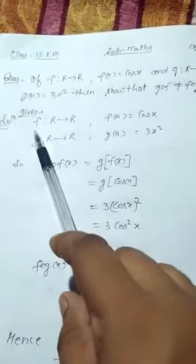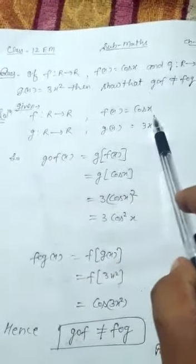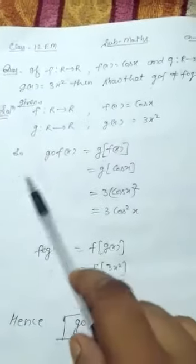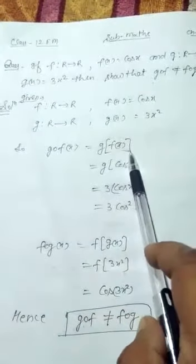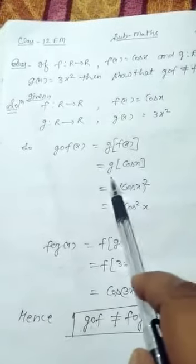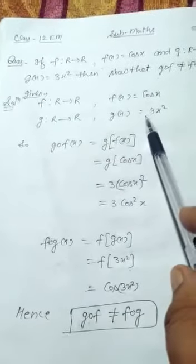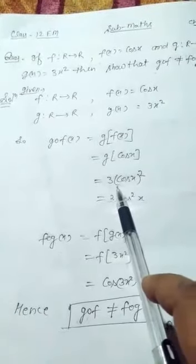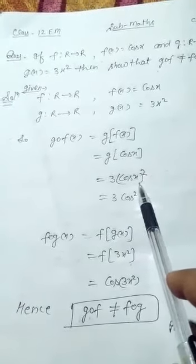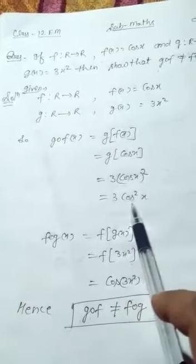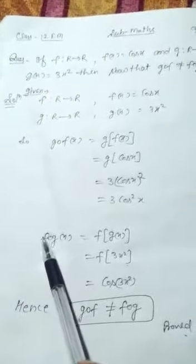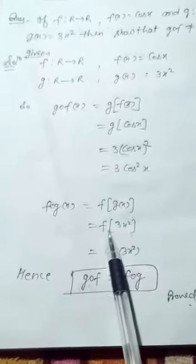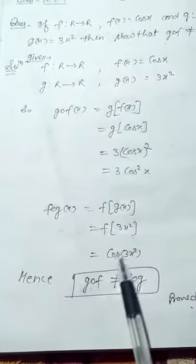Given f(x) = cos x and g(x) = 3x². We find gof(x) = g(f(x)) = g(cos x). Since g(x) = 3x², we get 3(cos x)² = 3cos²x. Now fog(x) = f(g(x)) = f(3x²) = cos(3x²). Hence gof is not equal to fog.